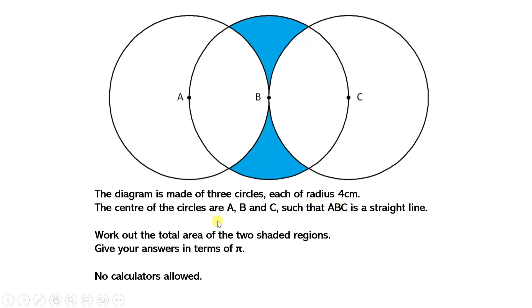The centres of the circles are A, B and C, such that ABC is a straight line, so cutting all the way across. Work out the total area of the two shaded regions, give your answers in terms of π. No calculator allowed.